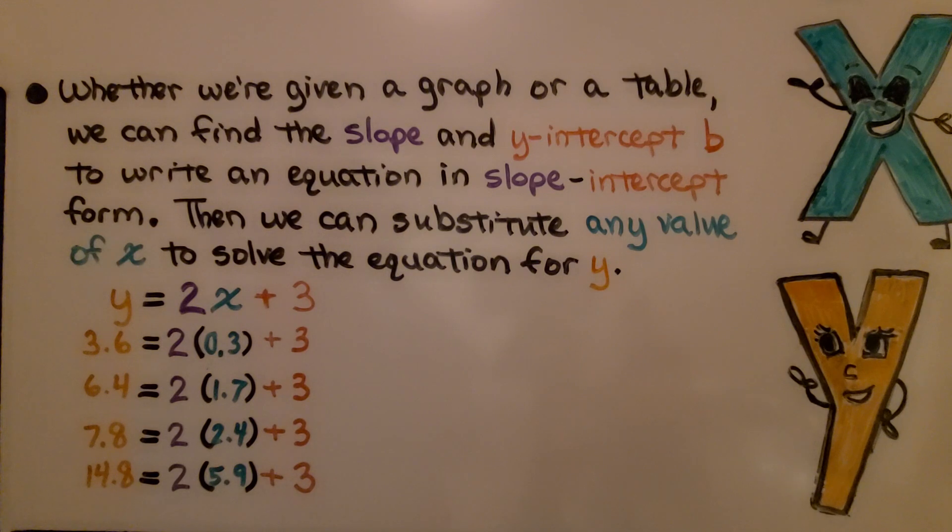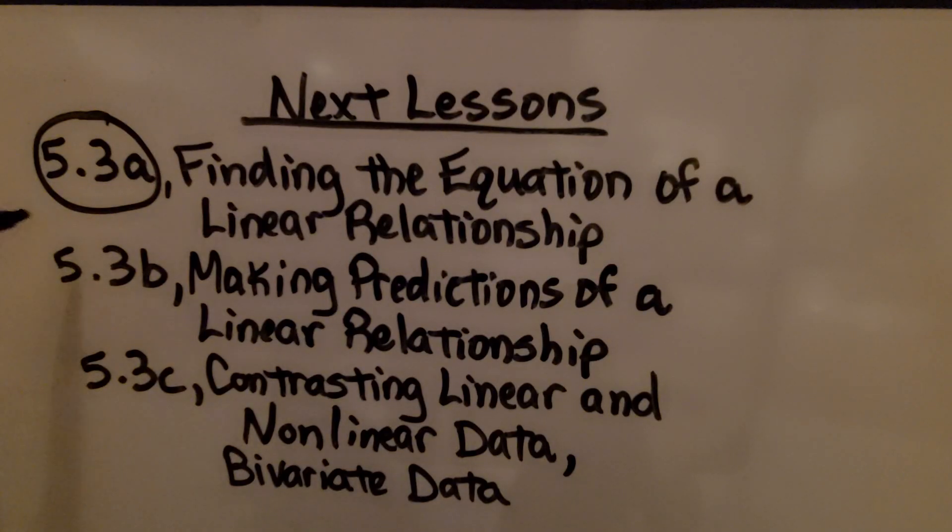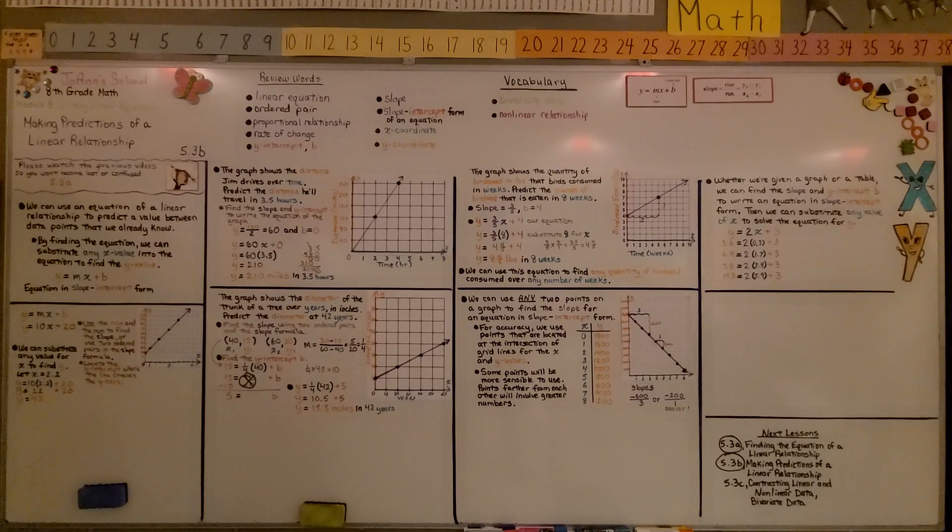Whether we're given a graph or a table, we can find the slope and y-intercept b to write an equation in slope-intercept form. Then we can substitute any value of x to solve the equation for y. An infinite number of possibilities. We're finished with 5.3b and we're moving on to the last part of the lesson, contrasting linear and non-linear data. We're going to learn about bivariate data. I really hope for those of you who have been watching every video in this playlist that by now you're saying, I already understand this. This is easy. I get it already. I hope you join me for the next lesson. Bye!